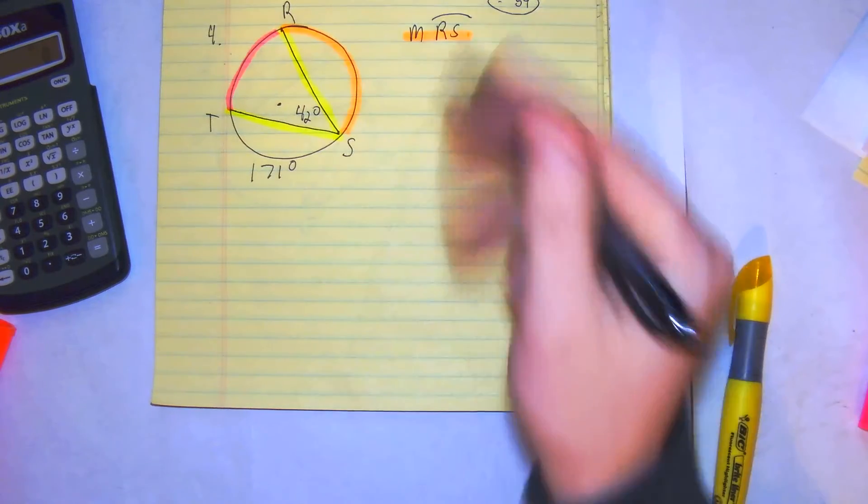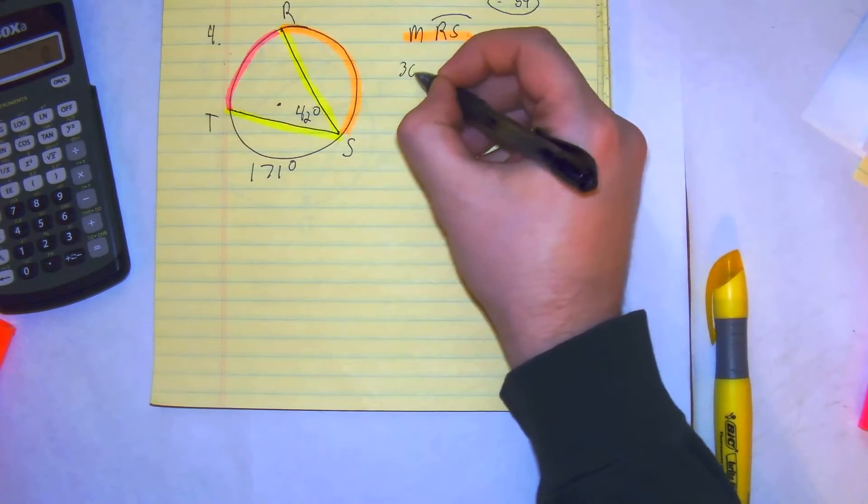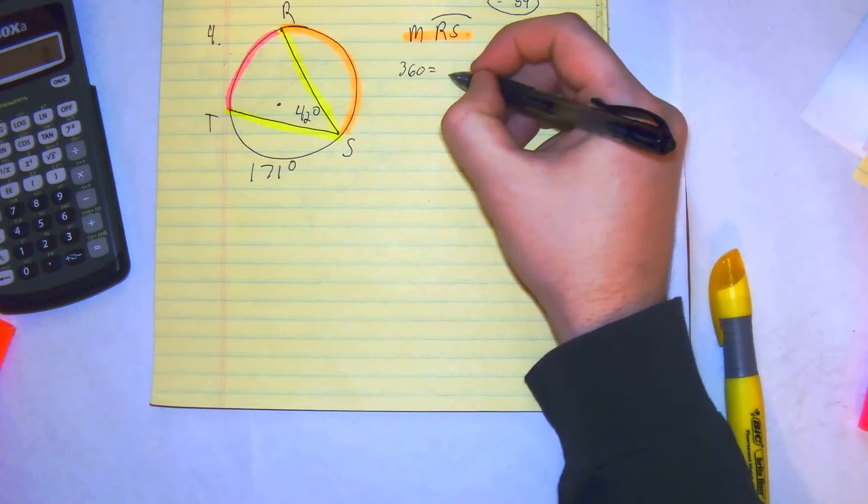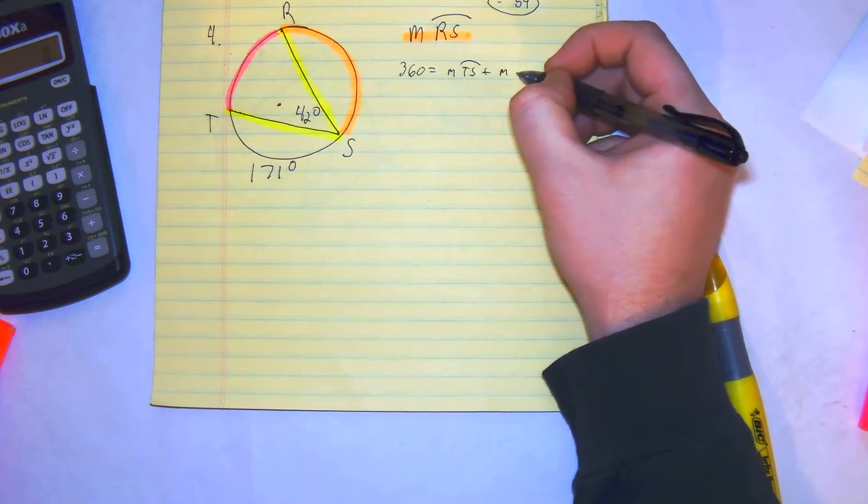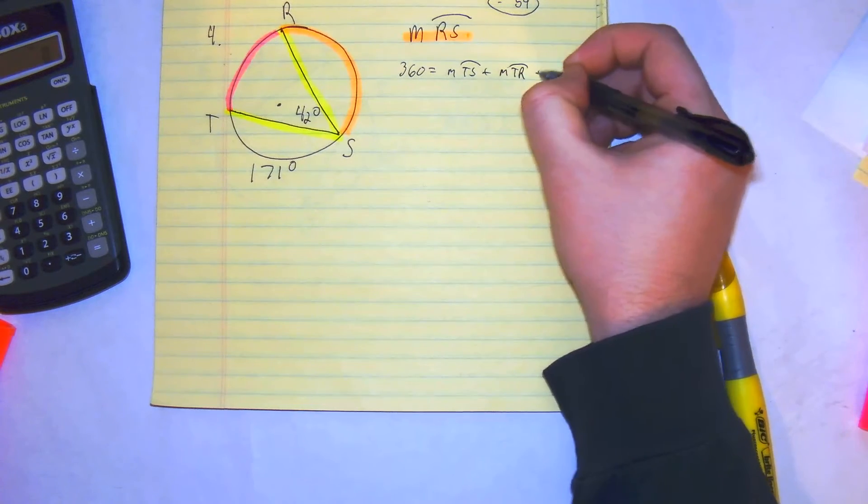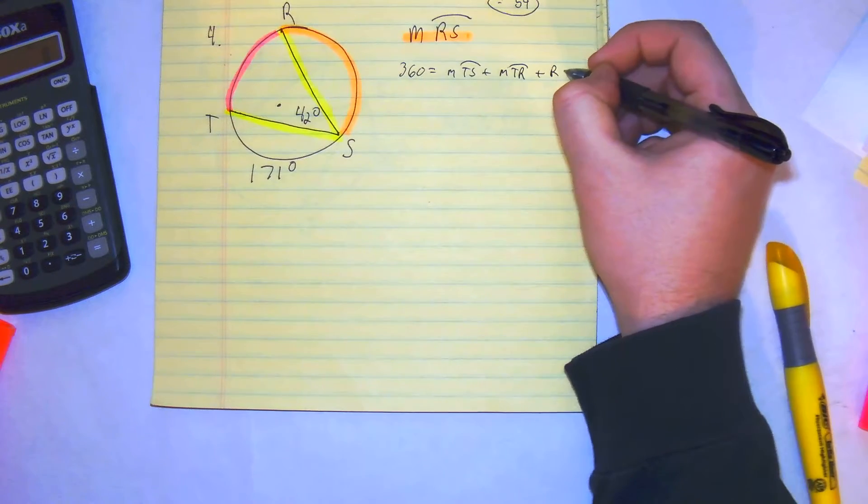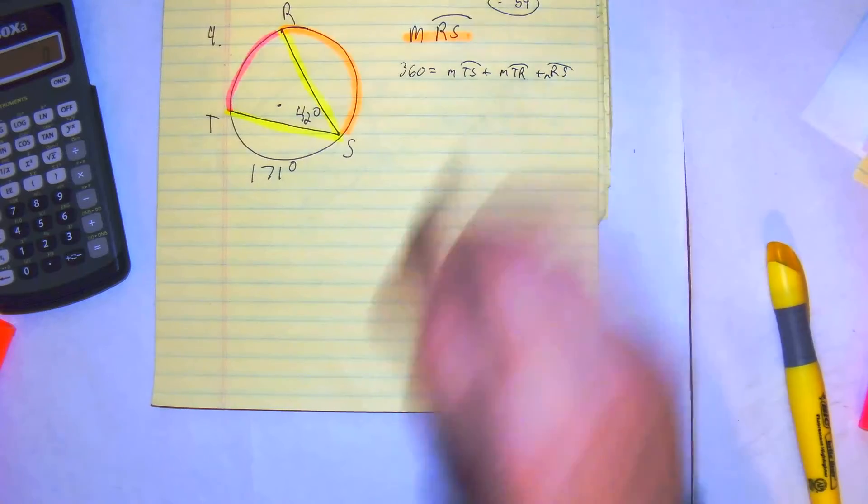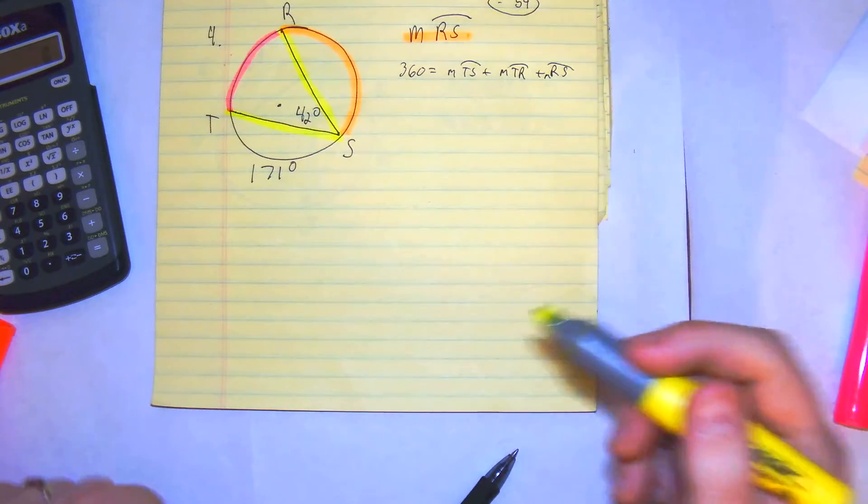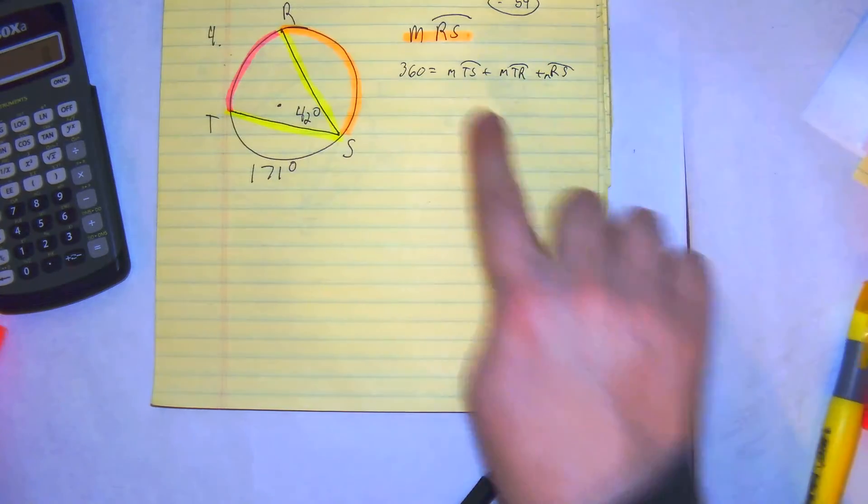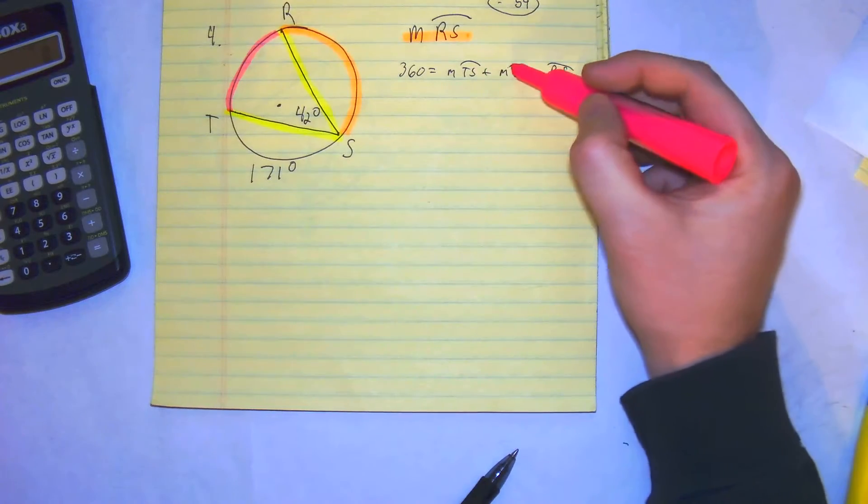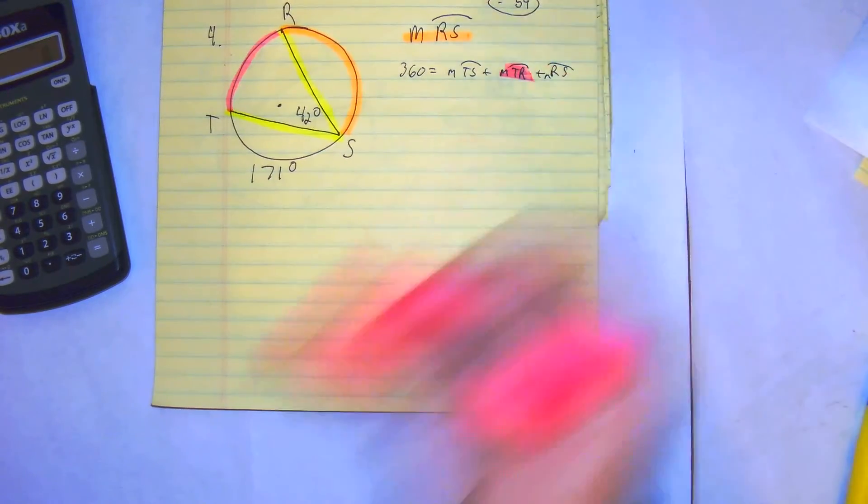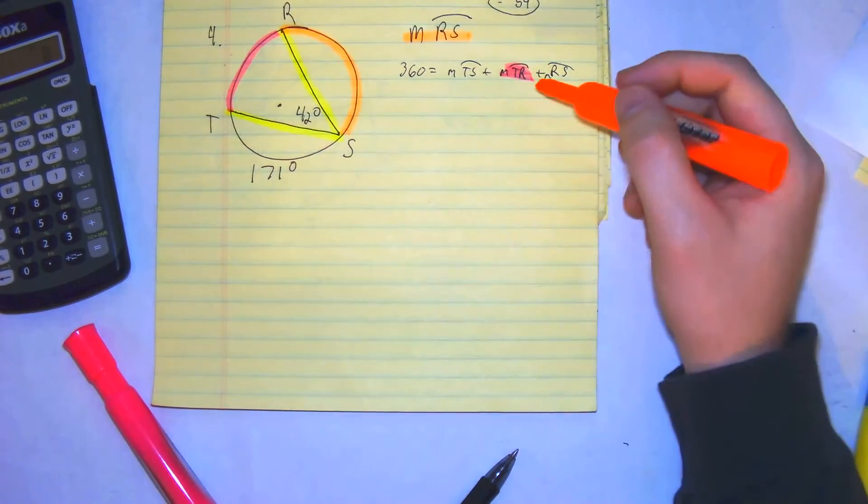To find rs, we need the following: 360 is equal to the measurement of ts, plus the measurement of tr, and the measurement of rs. So as you can see, we have ts. We need tr, which is pink. This is our intercepted arc. Then we need rs.